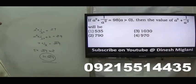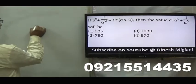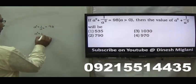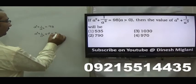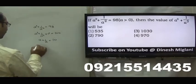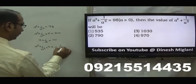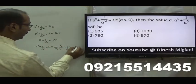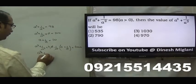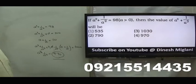a square plus 1 by a square equal to 98. Find a cube plus 1 by a cube. Adding 2 to both sides, a square plus 1 by a square plus 2 equal to 100. So a plus 1 by a equal to 10. Now I have to cube it. a cube plus 1 by a cube plus 3 into a into 1 by a into a plus 1 by a equals 10 cube, which is 1000. This simplifies, so a cube plus 1 by a cube equals 1000 minus 30, which is 970. Hence, fourth is my answer, 970.